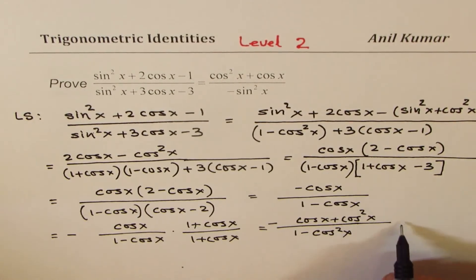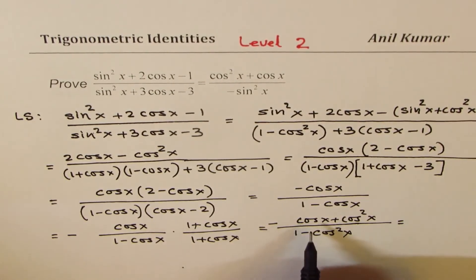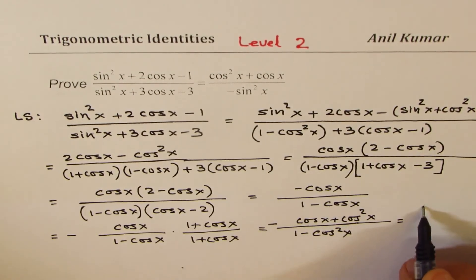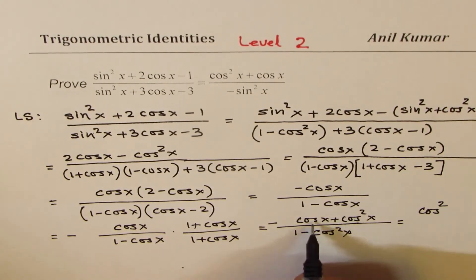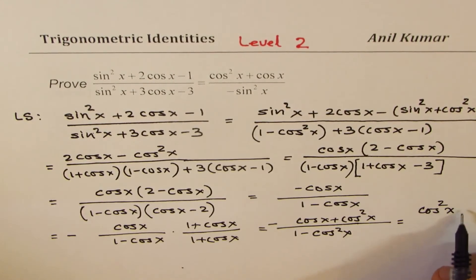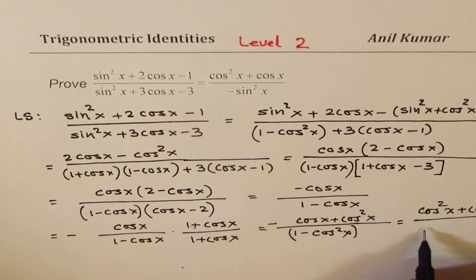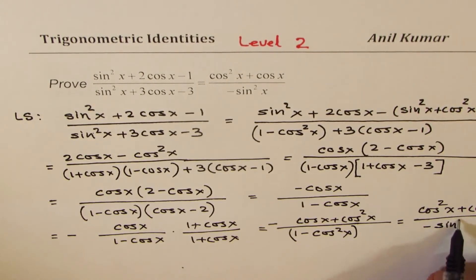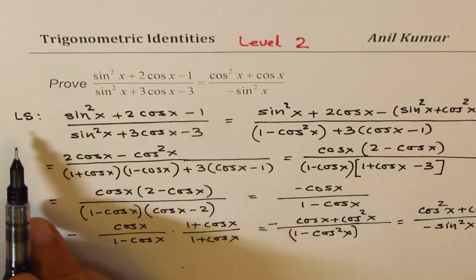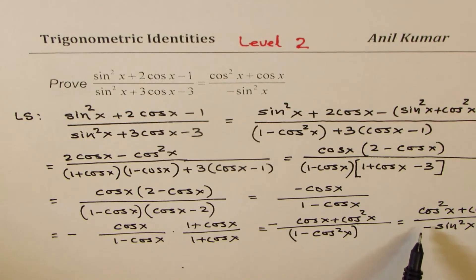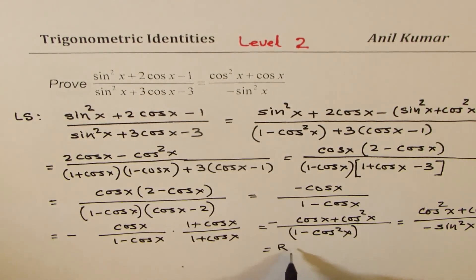1 - cos²x is sin²x. And the top numerator is cos²x. Let me rearrange. And I'm taking this sign in the denominator, writing 1 - cos²x as sin²x. We get -sin²x. So we started with left-hand side, and what we have got is the right-hand side, which is equal to the right-hand side.